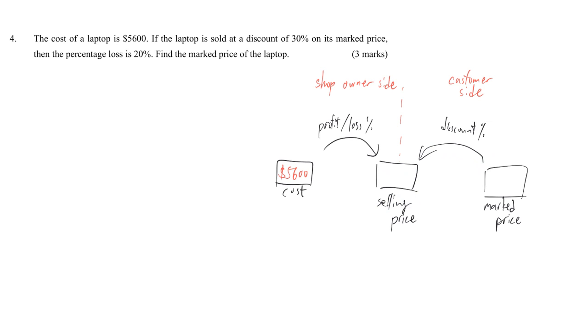Now it's given that the discount is 30%. That means from the market price, we deduct 30% to become the selling price. The percentage loss is 20%. Whenever we talk about gain or loss, we're looking at it from the shop owner's side. So the original cost, loss 20%, will become the real transaction price that we receive. So this is minus 20% this time.